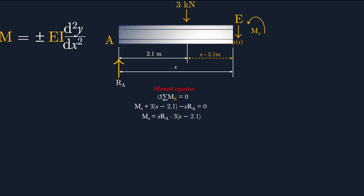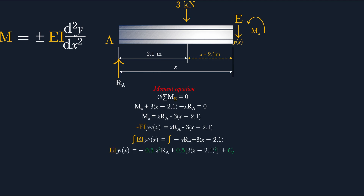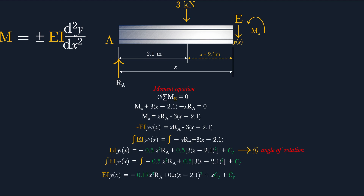Using the formula EI·y'' = Mx, we substitute our expression. To find y(x), we integrate. Integrating once gives the first derivative y'(x) plus a constant C1 — this is the angle of rotation equation. Integrating again gives y(x) plus C1·x plus C2 — this is the deflection equation. A key trick in the double integration method: do not expand the brackets when integrating.